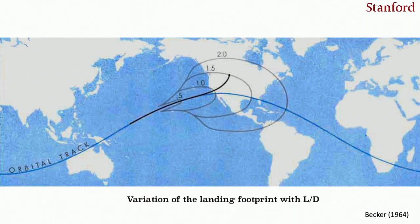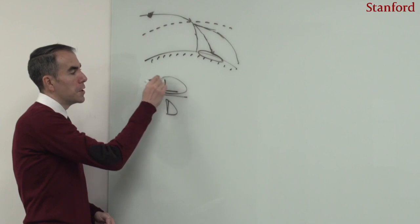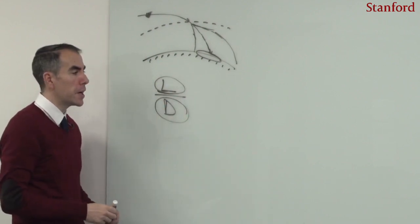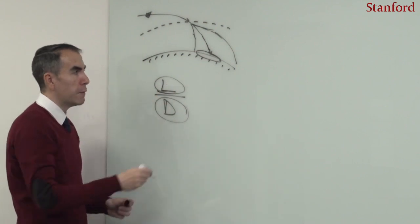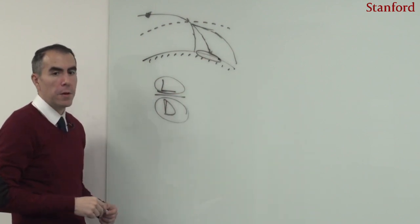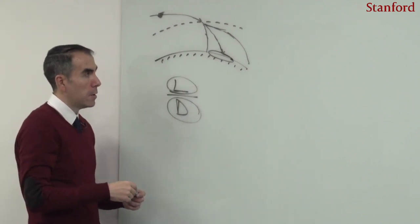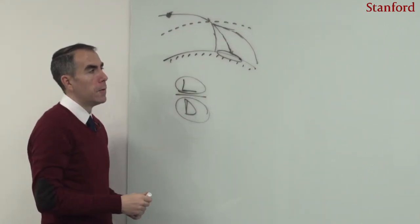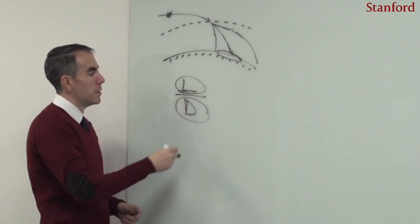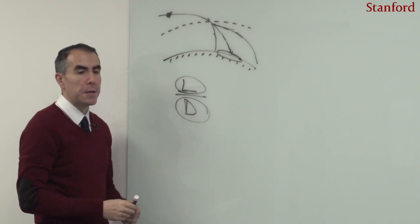As the lift-to-drag ratio increases—for instance, from 0.5 to 2.0—one can have a very large landing footprint, meaning one could land anywhere within it. However, that control also brings uncertainties, because if this lift force or drag force is not correctly captured in predictions, the landing point will strongly differ from the real landing zone of the spacecraft. This has happened many times in the space program.